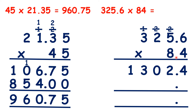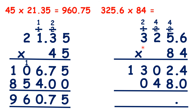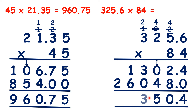Now we can cross out our working and write a 0 in our second answer line. Now 6 times 8 is 48 plus 4 is 52. 5 times 8 is 40 plus 5 is 45. 2 times 8 is 16 plus 4 is 20. And 3 times 8 is 24 plus 2 is 26. So now adding up our answer lines: 4 plus 0 is 4, 2 plus 8 is 10, 1 plus 0 plus 4 is 5, 3 plus 0 is 3, 1 plus 6 is 7, and nothing plus 2 is 2. So because we have our decimal point in our answer, we have 27,350.4.